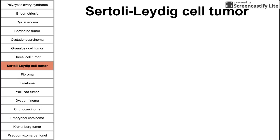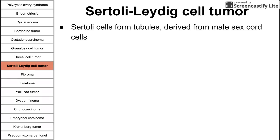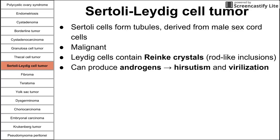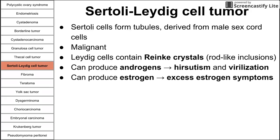Next is the Sertoli-Leydig cell tumor. Sertoli cells form tubules derived from male sex cord cells. These tumors can be malignant. The Leydig cells contain Reinke crystals, which are rod-like inclusions seen on histology. These can produce androgens, giving symptoms of high testosterone such as hirsutism and virilization. They can also produce estrogen, causing excess estrogen symptoms.